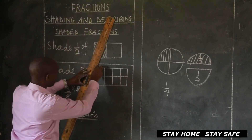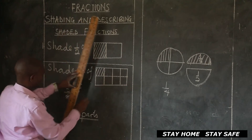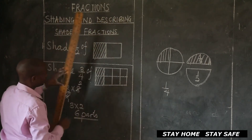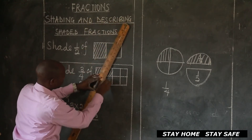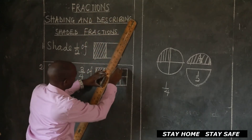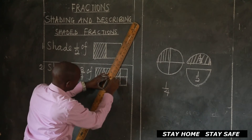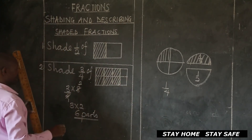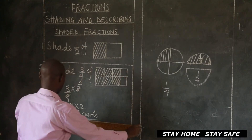Come and shade them here properly using a pencil. We shade one, two, three, four, five, six. Therefore I have shaded three quarters of that diagram.